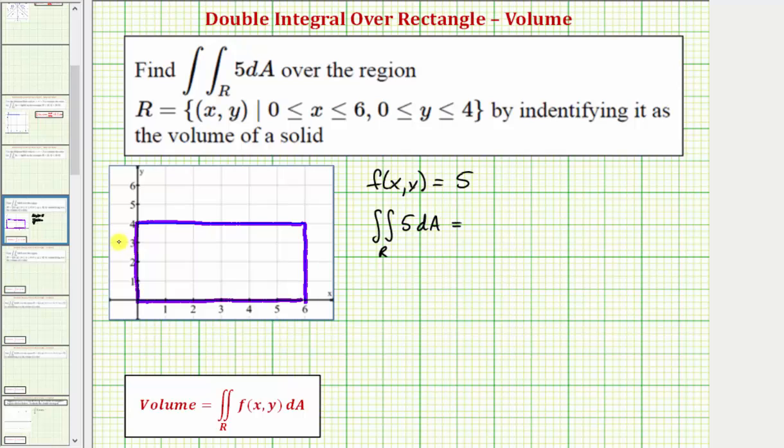which we can see the area of the base would be six times four, 24 times the height, which would be the function value of five, giving us a volume of 120 cubic units.